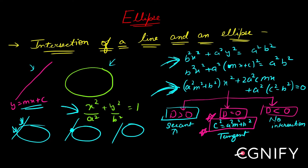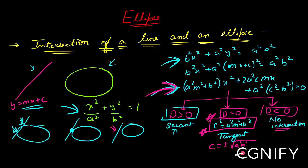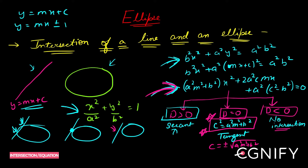If the discriminant is less than zero, there are no valid x-coordinates satisfying the equation, meaning the line will not meet the ellipse at all. So the condition for no intersection is that the discriminant of this quadratic is less than zero. From this analysis, it is evident that c must equal ±√(a²m² + b²) for the line y = mx + c to be a tangent to the ellipse.